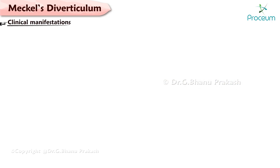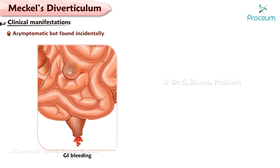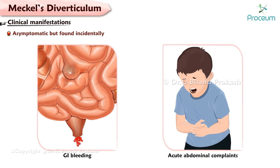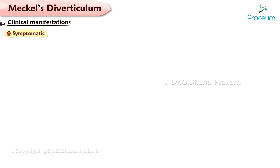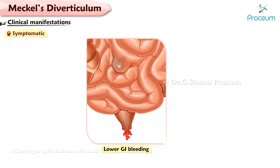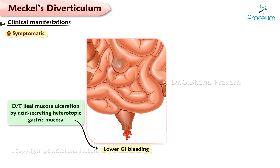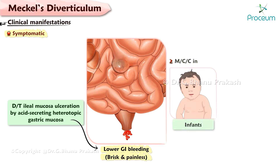Clinical manifestations. Meckel's Diverticulum is usually asymptomatic, but can be found incidentally or can present with a variety of clinical manifestations, including gastrointestinal bleeding or other acute abdominal complaints. Symptomatic Meckel's Diverticulum causes lower gastrointestinal bleeding, resulting from ulceration of adjacent ileal mucosa by acid-secreting heterotopic gastric mucosa contained in the diverticulum. Bleeding is often brisk and painless. Meckel's Diverticulum is the most common cause of significant lower gastrointestinal bleeding in infants and young children.